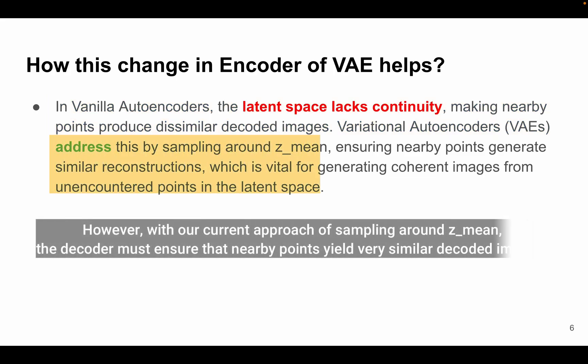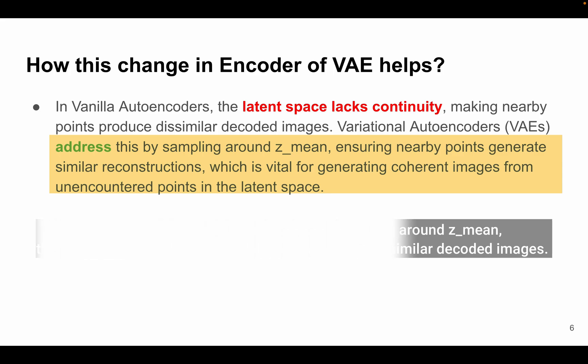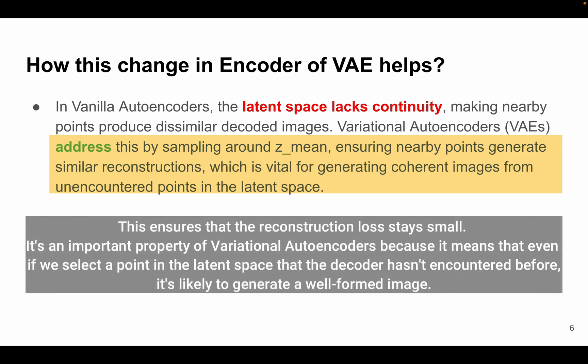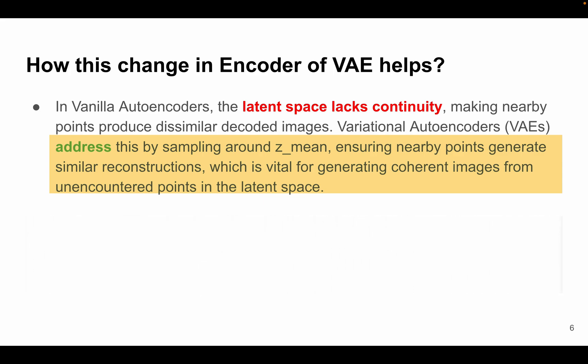However, with this current approach of variational autoencoder, when we sample around z_mean, the decoder must ensure that nearby points yield very similar decoded images. Now this ensures that reconstruction loss stays minimal or it stays very small. Now it is a very important property of variational autoencoder, and it is a cool property I can say. Because it means that even if we select a point in latent space that the decoder hasn't encountered before while training, it is likely to generate a well-formed image.